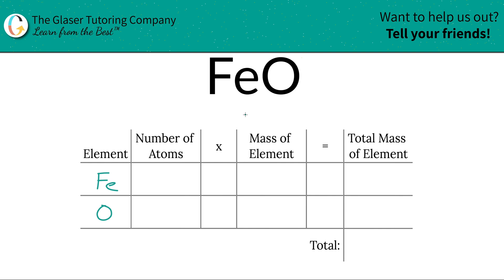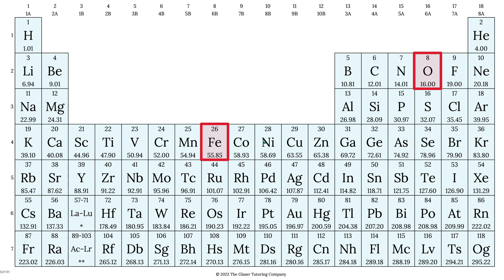Then we write down the number of atoms — that's where the subscripts come into play. If there's no subscript, assume it's a 1. So there's one iron and there's also one oxygen. Then we're simply going to multiply those number of atoms by the mass of each element. Those masses are found on the periodic table, so let's take a look.